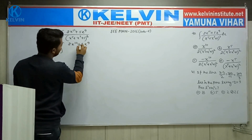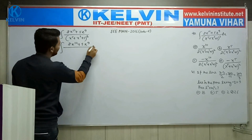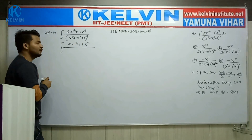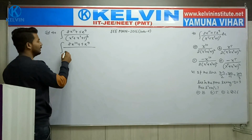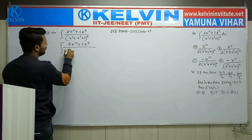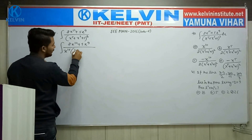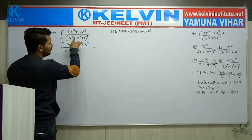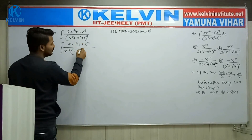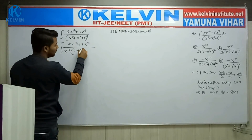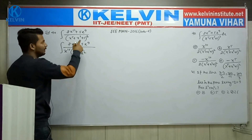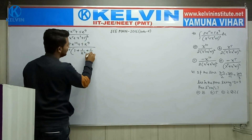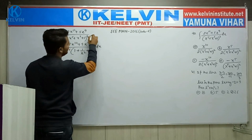This is 5 of x to the power 9. If I have x to the power 5, then what will we do? This is 1 upon x square and this is 1 upon x to the power 5, whole power cube, dx.